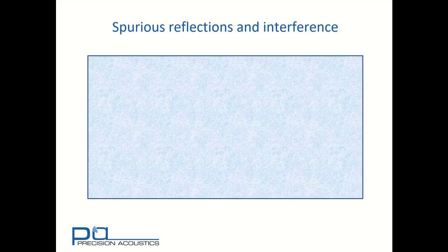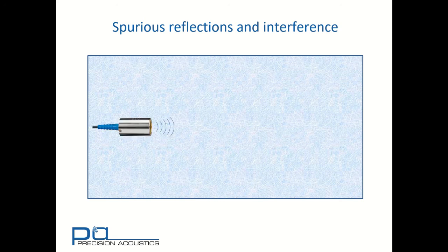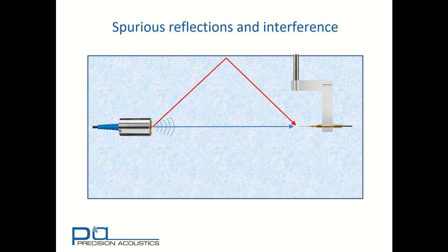There may also be a problem if we're using a transducer with a broad radiation pattern. Consider here a transducer radiating into water. The direct path between the transducer and the receiving hydrophone is shown in blue. But if the transducer has a broad radiation pattern, there may also be an indirect path, here shown in red, that arises from reflections at either the water-air surface or at the tank edges.